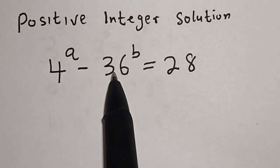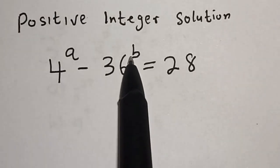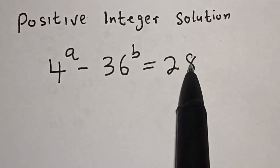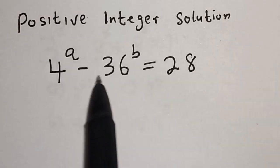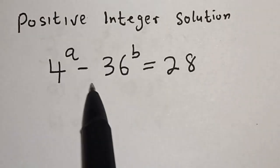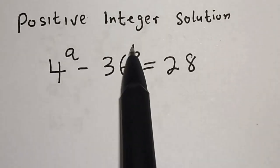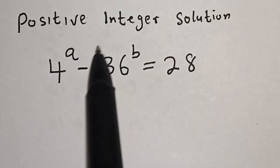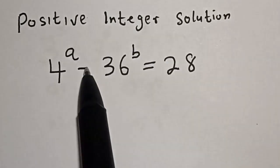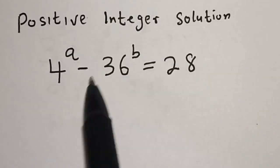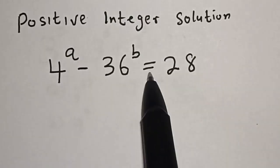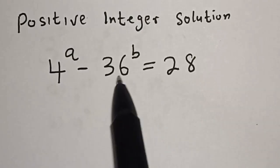4 to the power of a minus 36 to the power of b is equal to 28. Hi everyone, welcome to my class. In this class, we want to find the positive integer solution of a and b from this given equation.